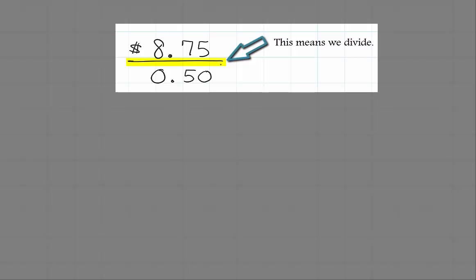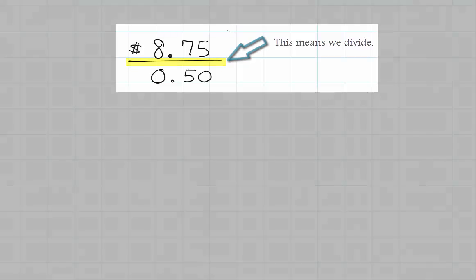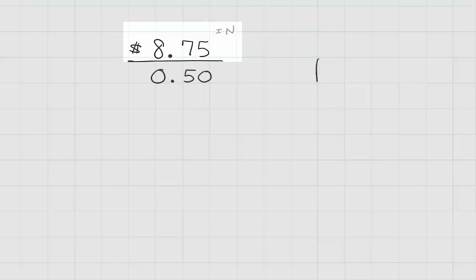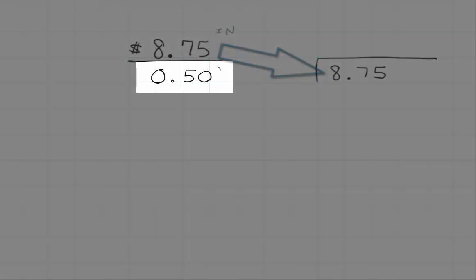We know that every fraction is a division problem. The numerator, which is the number on top, goes inside our division house when we do long division. The denominator is the one that's knocking at the door.